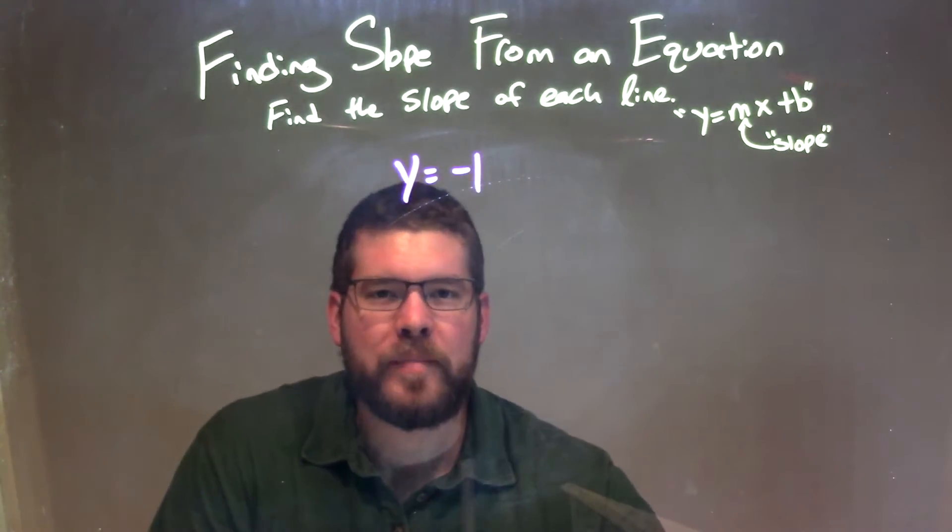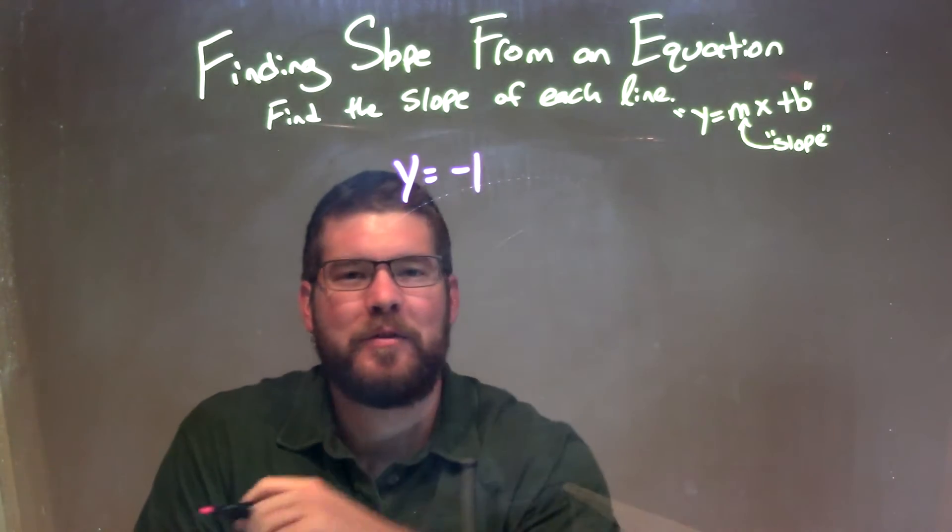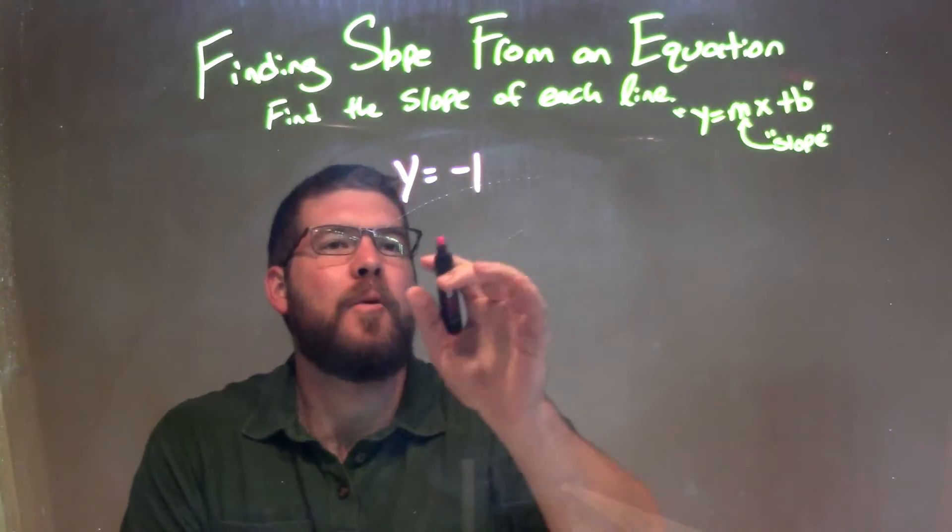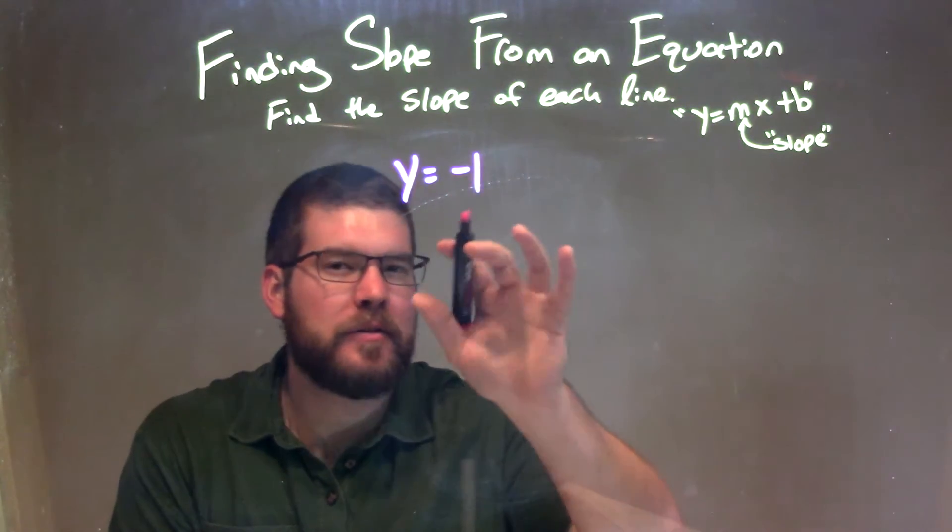Well, if y equals negative 1, is that really in our slope intercept form? Yes, it is. But we need to kind of figure some things out.